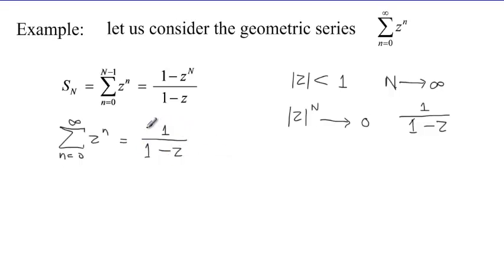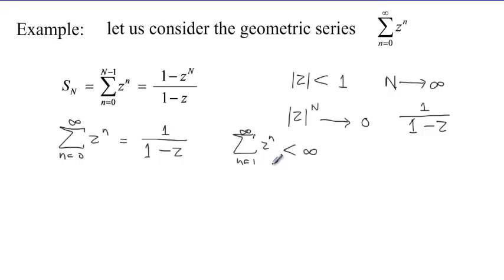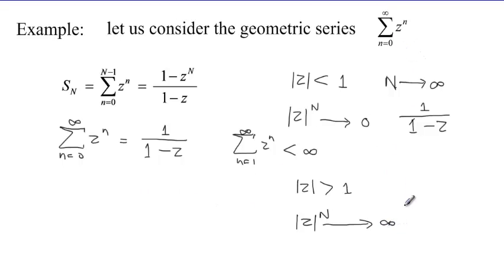We express convergence by saying the summation of z to the power n from n equals 0 to infinity is less than infinity, meaning it is finite — and so the series is convergent. On the other hand, if the absolute value of z is greater than 1, then the absolute value of z to the power n will grow indefinitely towards infinity, and the series would be said to be divergent.